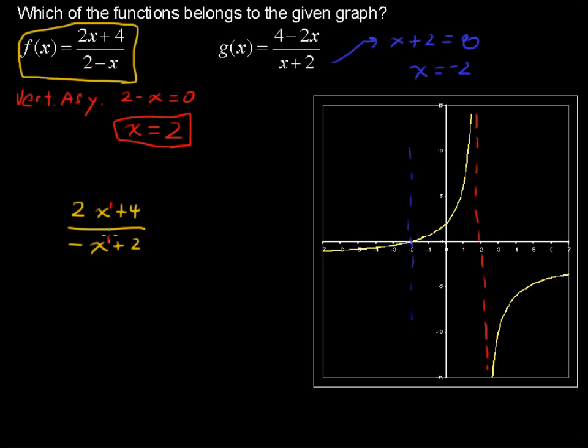So if we plugged in very large numbers, if I wanted to think about the end behavior—that is, going to the right forever or going to the left forever—what would happen? If I plugged in a huge number here, the plus 4 and plus 2 wouldn't really matter. We'd have 2 times huge over negative times huge. So I would just be looking at these leading coefficients.